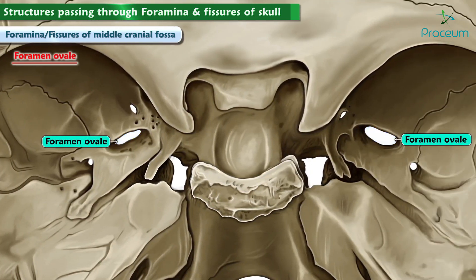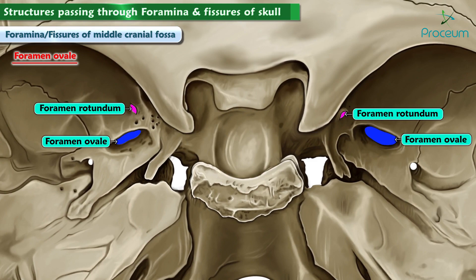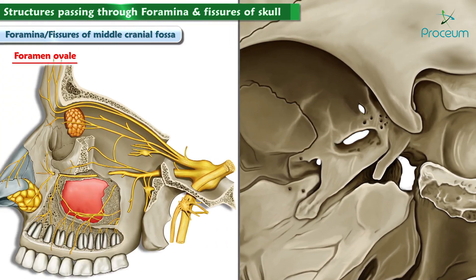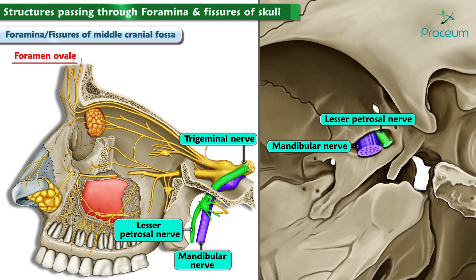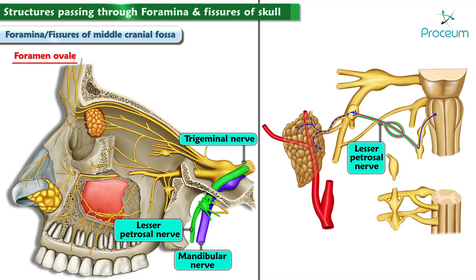Foramen ovale is this oval-shaped foramen that lies posterior and lateral to the foramen rotundum. It allows passage of the final division of the trigeminal nerve, the mandibular nerve. The foramen ovale also allows passage of the lesser petrosal nerve, which is a branch of the ninth cranial nerve, the glossopharyngeal nerve, which innervates the parotid gland.